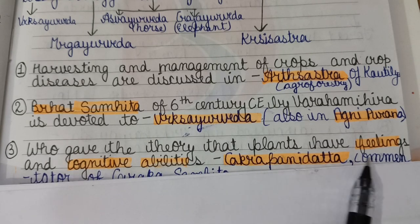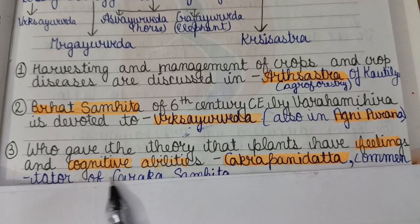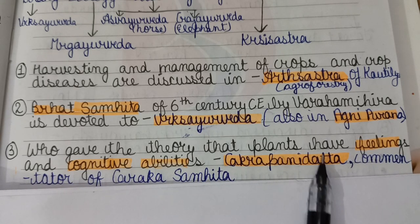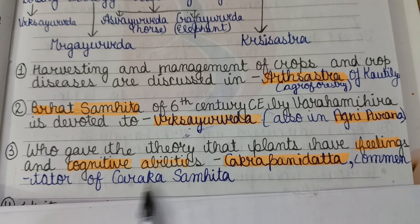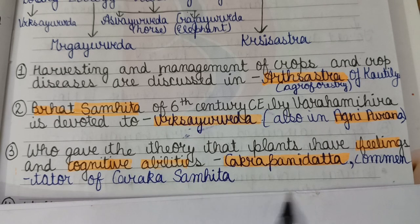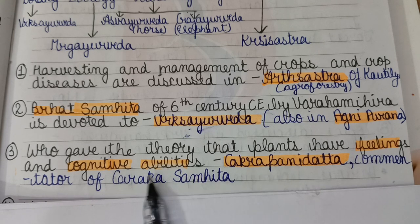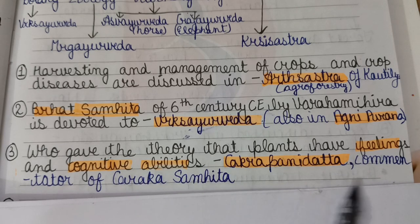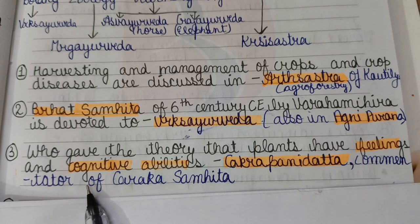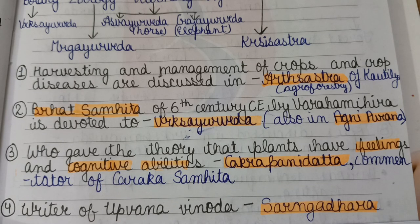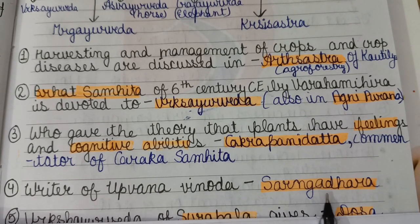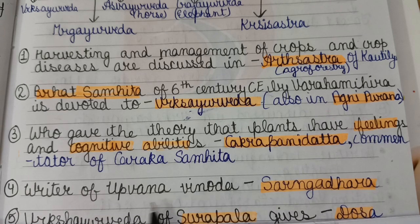Chakrapani Dutta, who is the commentator of Charak Samhita, gave the theory that plants also have feelings and cognitive abilities - cognitive means intellectual abilities. The writer of Upavana Vinod is Sarangdhar.